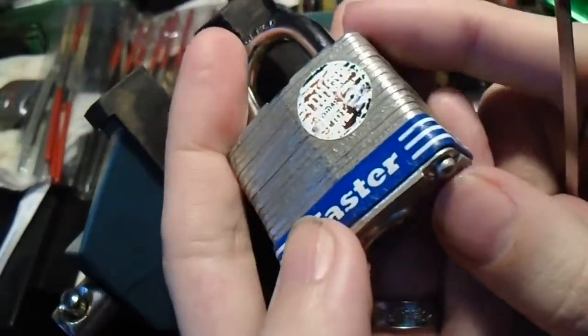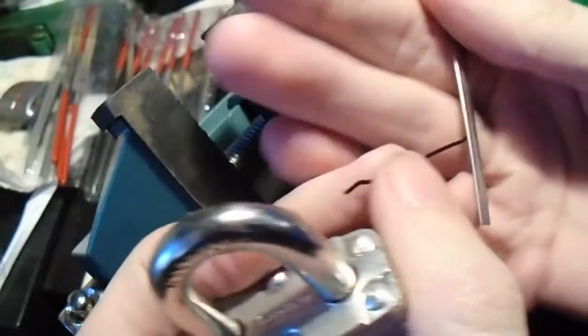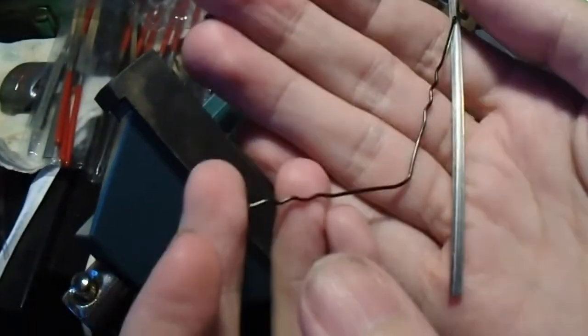Hey everybody. In my last video, I showed you how to pick a Master Lock No. 1 with a paper clip. This time, we're going to try to do it with a bobby pin.